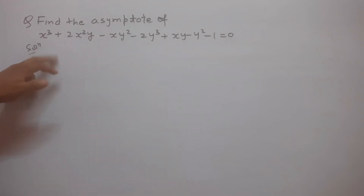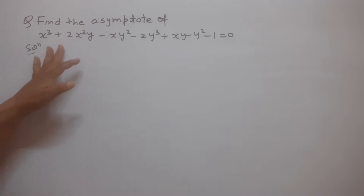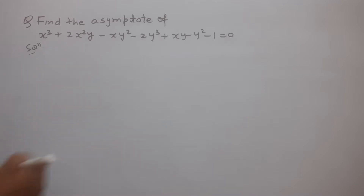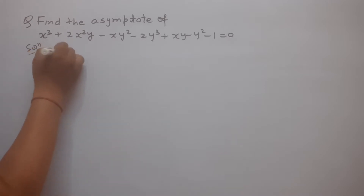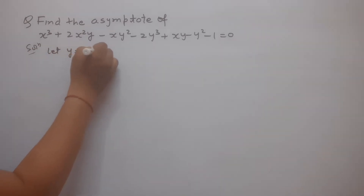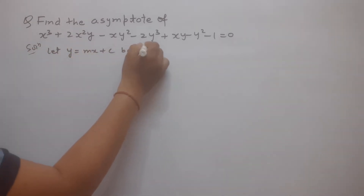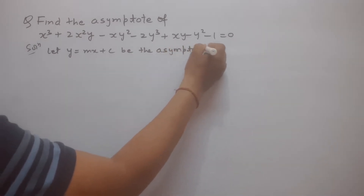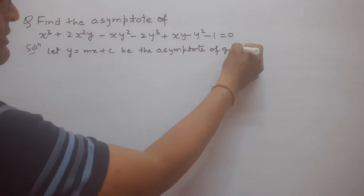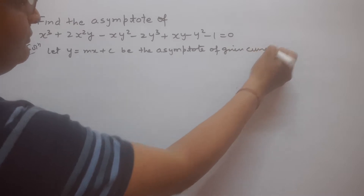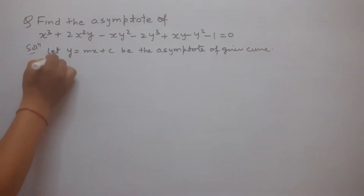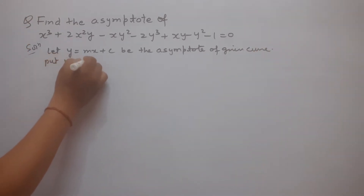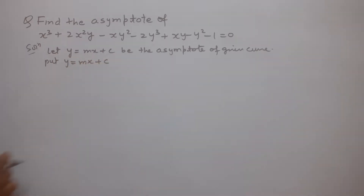Students, in this question, we find out the asymptote of the given algebraic curve. We first suppose that y = mx + c is the asymptote of the given curve. So we put y = mx + c in the above algebraic curve.